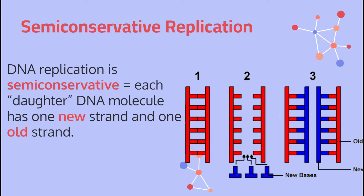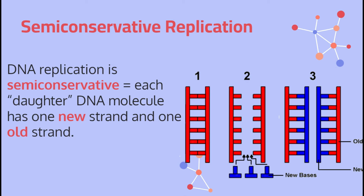Each daughter DNA molecule has one new strand and one old strand. In image one we have one strand of DNA representing the original in red. In picture two, the DNA has been split open by DNA helicase and DNA polymerase brings in the blue nucleotides to build new DNA strands. In image three, we see the final result — two new DNA strands — and when we look at each of them, we notice some reds and some blues representing the old and new strands. They're both equally old and new. This actually protects our information and allows us to utilize DNA for longer rather than constantly making entirely new copies.